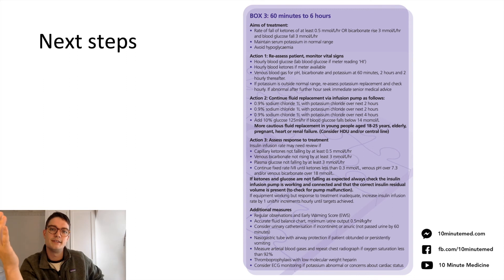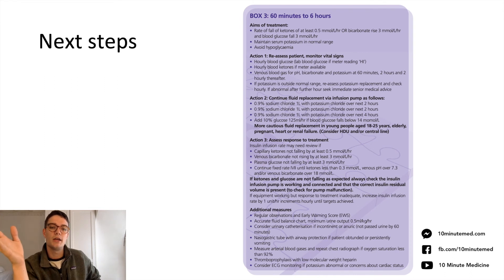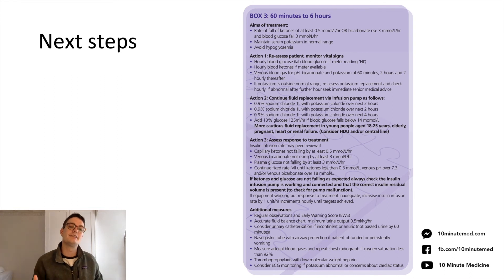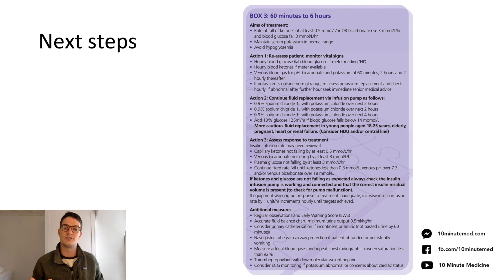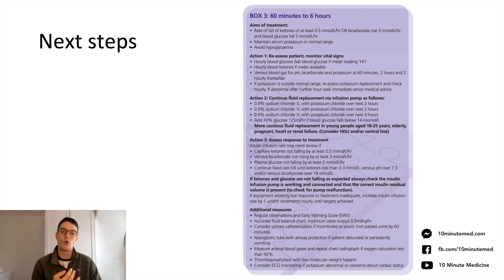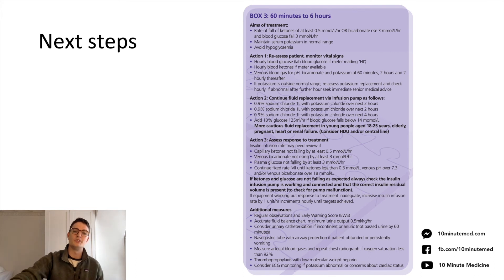If the patient isn't responding to treatment, first consider whether the insulin infusion pump is set up correctly and the insulin is actually going into the patient. If that's working, it may be worth increasing the insulin infusion by one unit per hour each hour until targets are achieved — but talk to seniors and get the diabetic specialist nurses involved. Also think about the patient as a whole: are we treating the infection or underlying cause, and have we given VTE prophylaxis, as these patients are at high risk of clots.